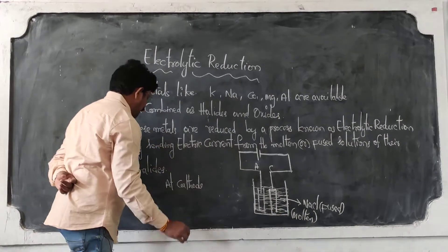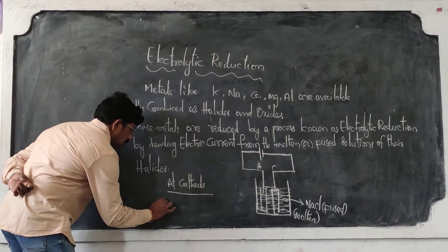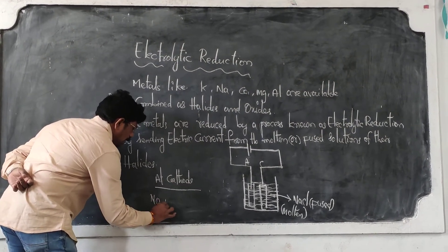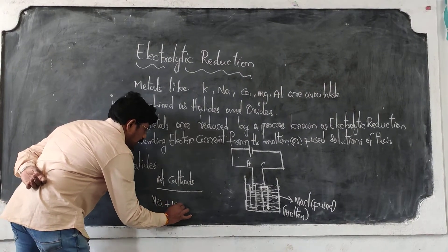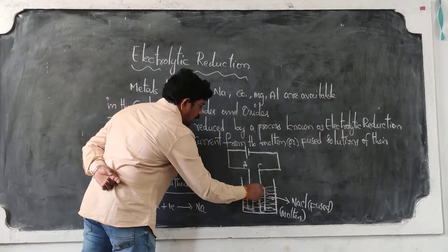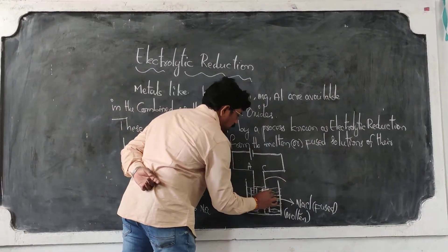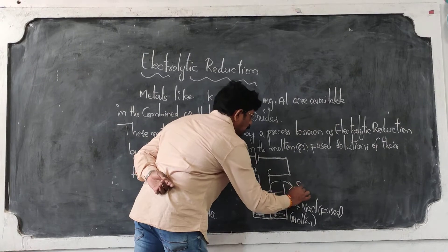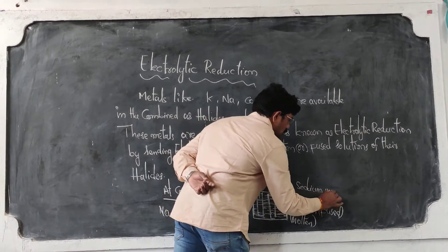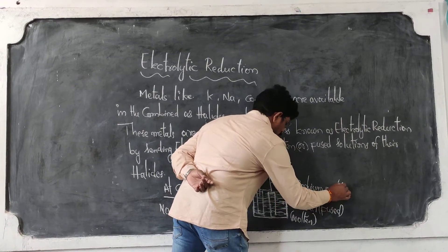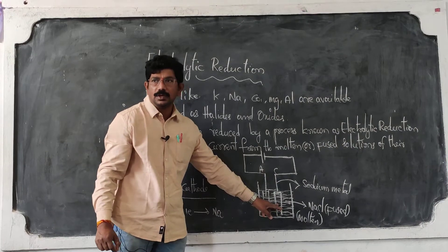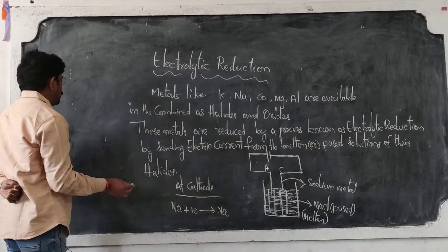What happens at the cathode: Na⁺ gains one electron and is deposited as pure sodium metal at the cathode. So sodium metal is deposited at the cathode.